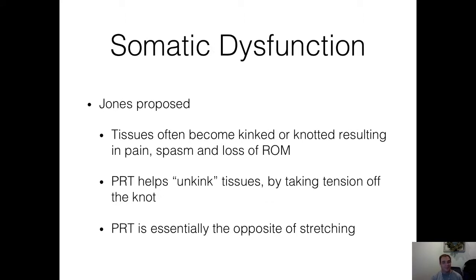With somatic dysfunction, tissues often become kinked and knotted, resulting in pain, spasm, and loss of range of motion. Positional release helps to unkink the tissues by taking the tension off the knot.